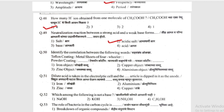Identify the correlation: Teflon coating is to metal sheet of a four-wheeler, as powder coating is to what? (Tari powder coating timba timba.) Options: iron article (lohkhandi vashtu), copper article (tambya cha vashtu), zinc article (jastha cha vashtu), or aluminium article. The answer is iron article (lohkhandi vashtu).